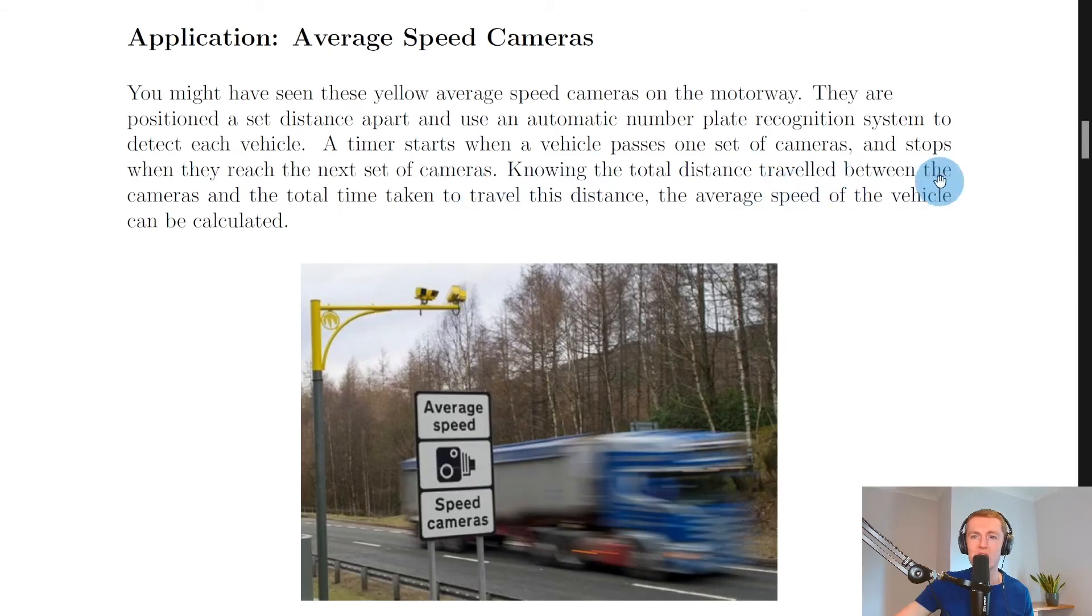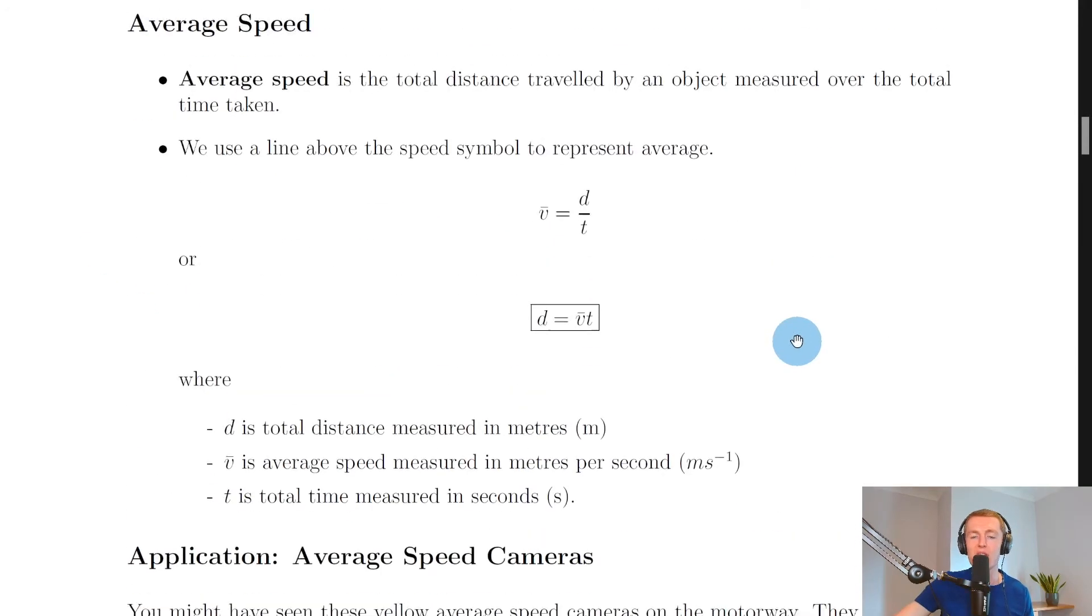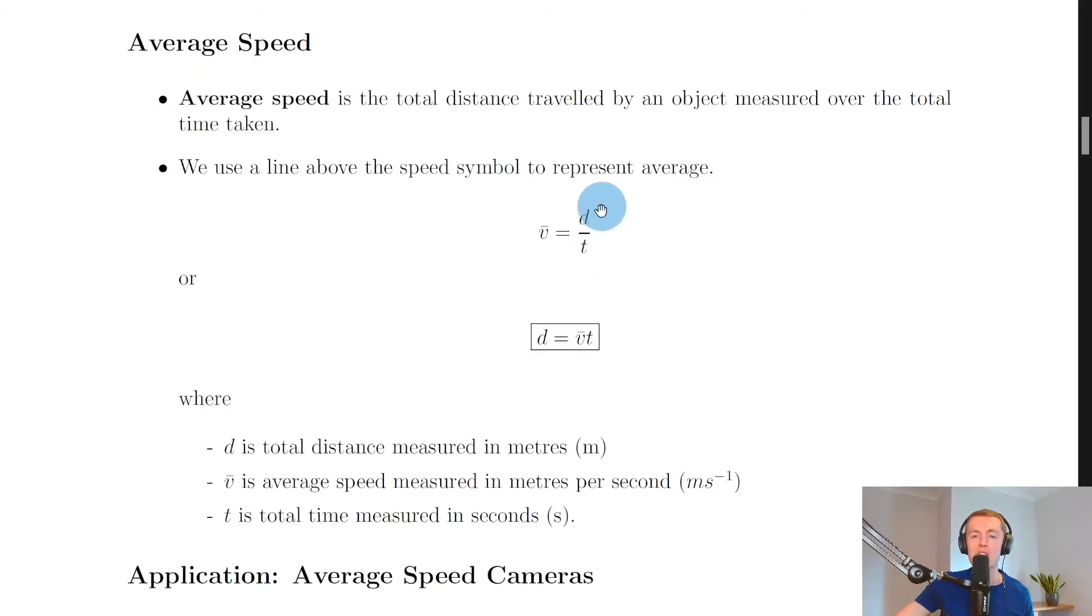Knowing the total distance traveled between the cameras and the total time taken to travel this distance, the average speed of the vehicle can be calculated. So we can use this kind of calculation here: average speed equals distance over time, knowing the total distance traveled between the two average speed cameras and the time to travel between the two cameras, and then we can calculate its average speed.